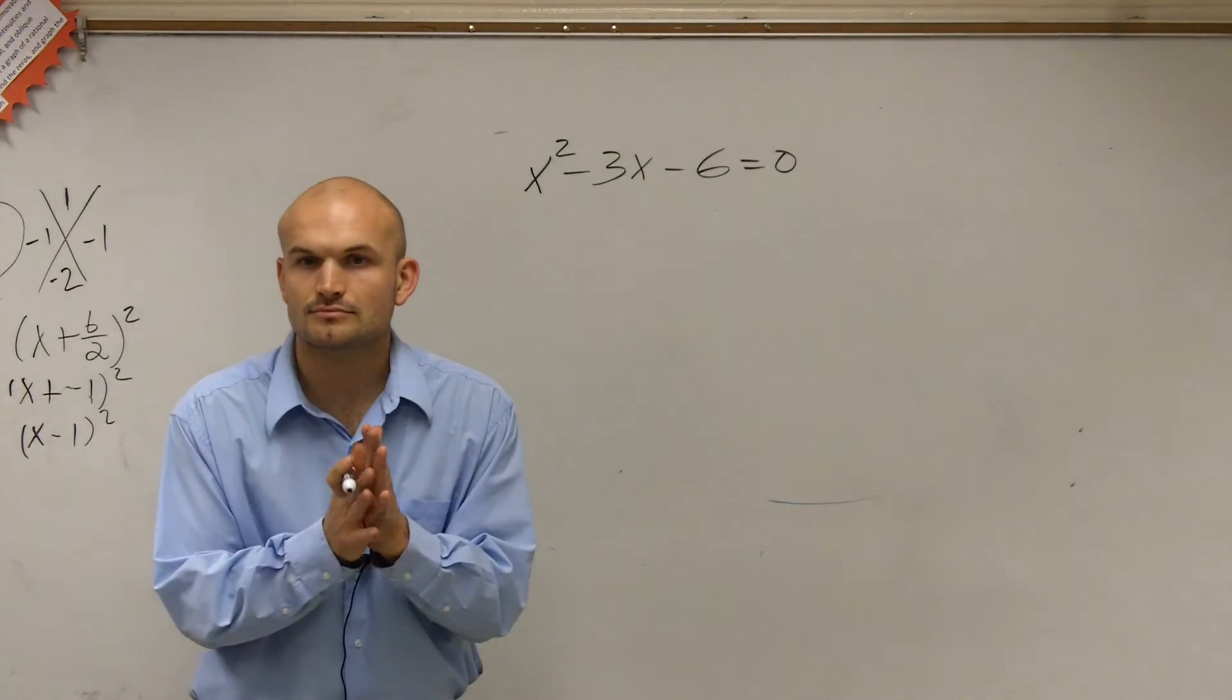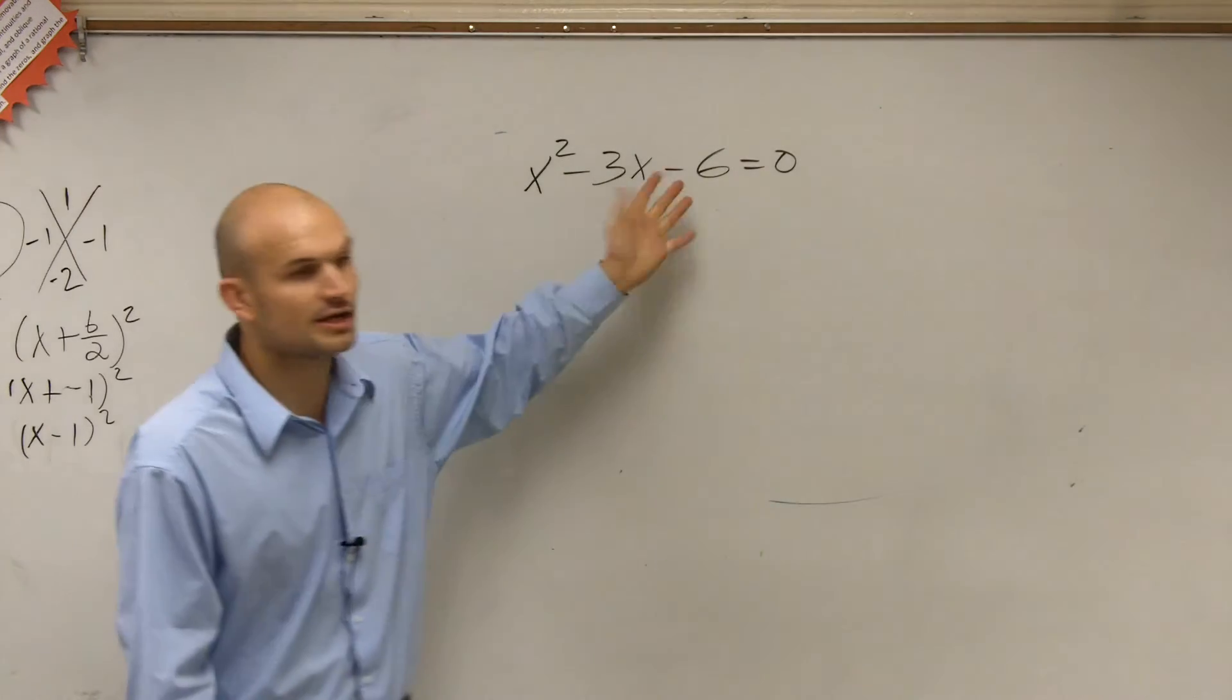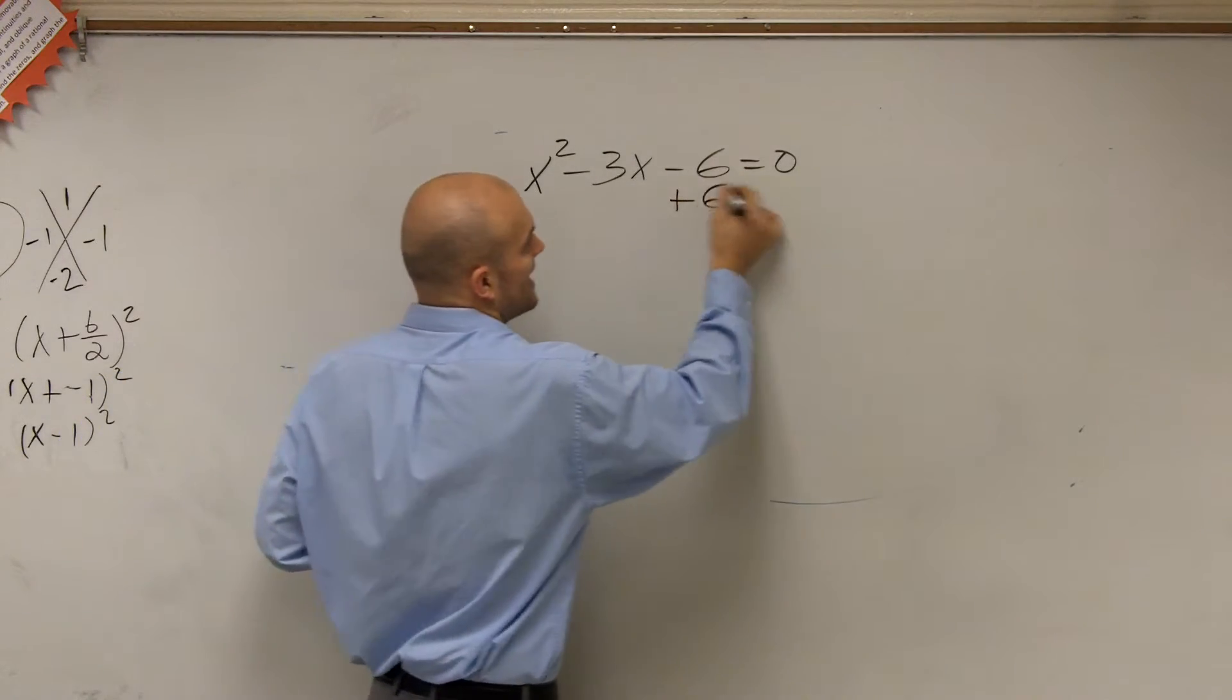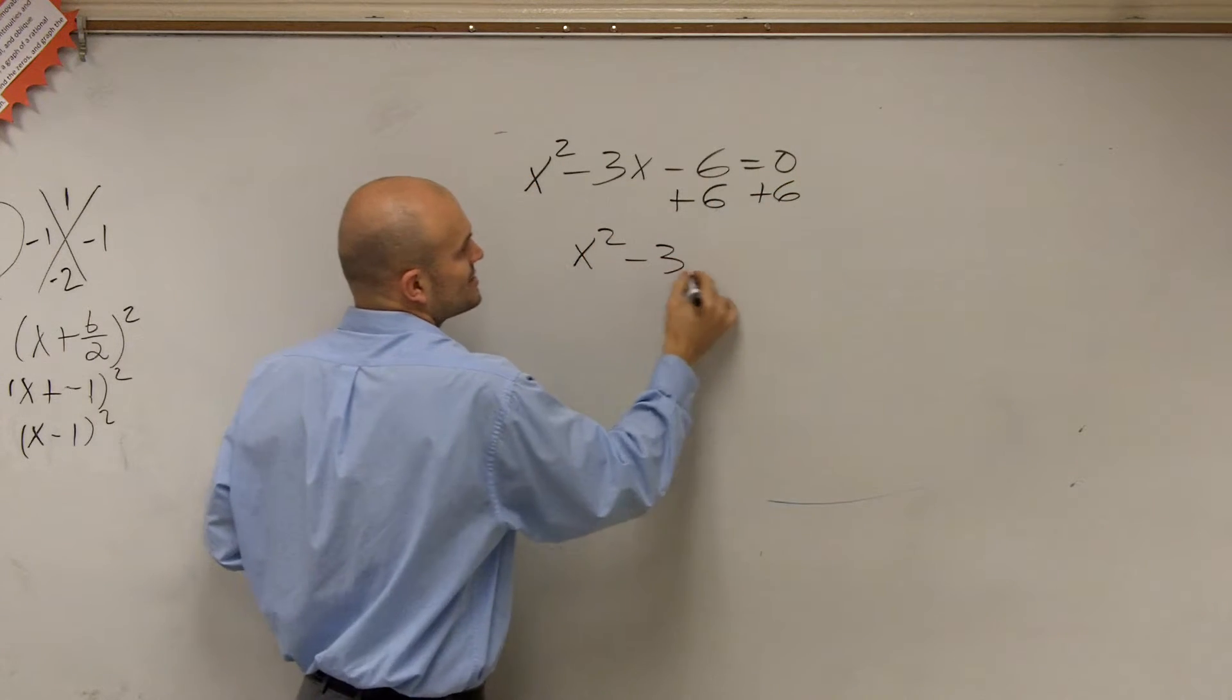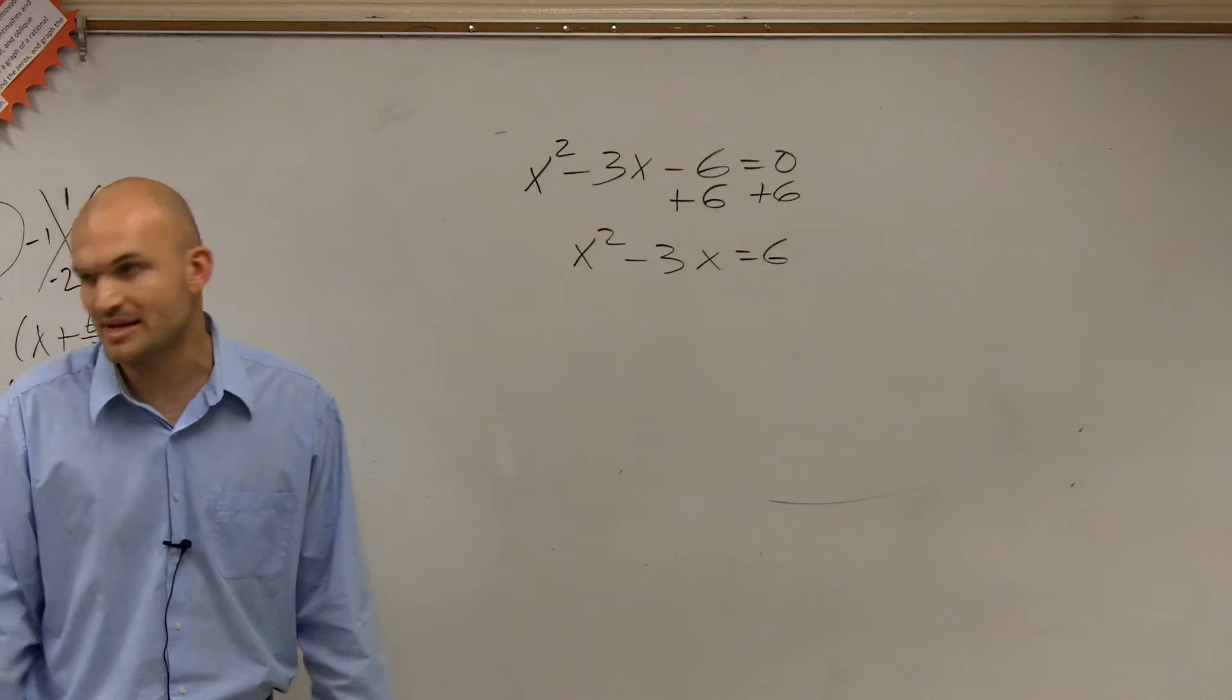OK, so now we're looking at this. If you're going to do this one, let's just follow the same pathway. What we're simply going to do is add 6 over here. x squared minus 3x equals 6, right? That's the first step. That's the basic one.